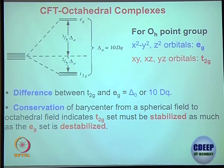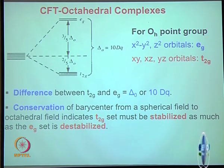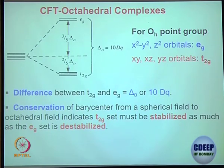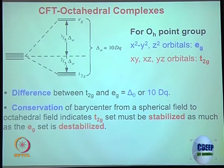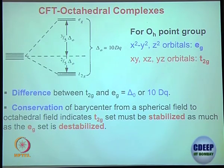Depending on the energy difference between T2g and Eg — whether it is large or small — electrons will be occupied differently. If the gap is small, electrons follow Hund's maximum spin principle and fill both T2g and Eg. But if the gap is very large, putting an electron into the Eg orbital costs too much energy. There is also a pairing energy cost to consider when pairing electrons in T2g.